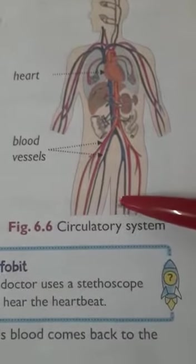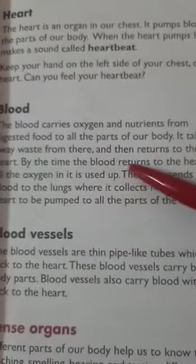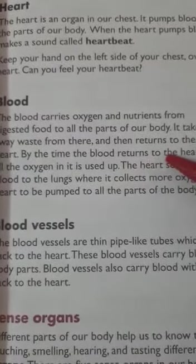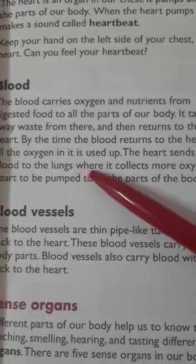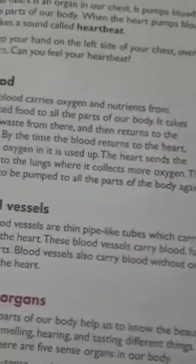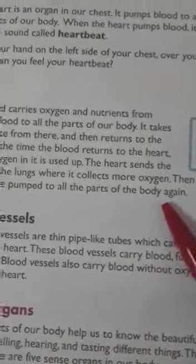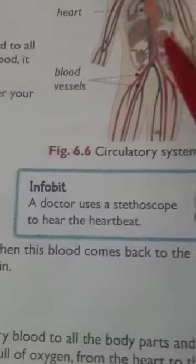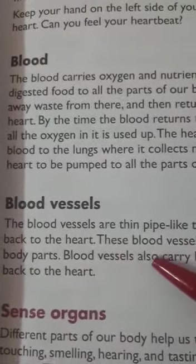The blood carries oxygen and nutrients from digested food to all parts of our body. It takes away waste from there and returns to the heart. By the time blood returns to the heart, all the oxygen in it is used up. The heart then sends the blood to the lungs where it collects more oxygen, and this blood comes back to the heart to be pumped to all parts of the body again.